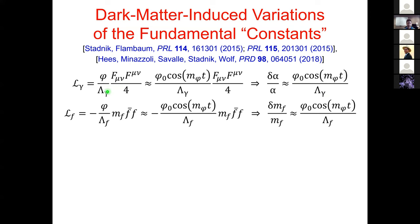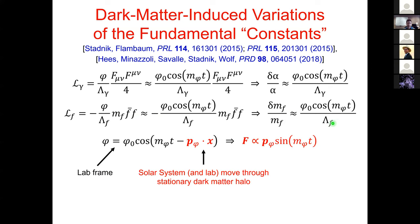Besides the electromagnetic coupling, we can also consider linear interactions of the scalar field φ with standard model fermions, which would produce apparent oscillations in fermion masses. The new physics energy scale for this coupling can in principle differ from that for the electromagnetic coupling. Additionally, because ordinary matter in the galaxy orbits the galactic center while the dark matter halo is essentially at rest in the galactic frame, we expect relative motion between our laboratory apparatus and the dark matter halo.